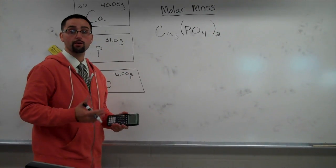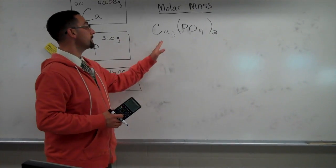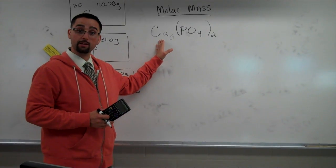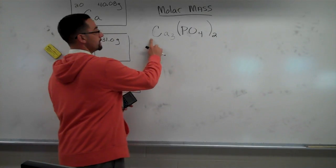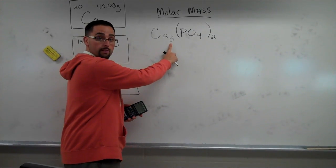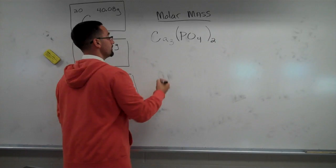So the first thing that we need to do to calculate molar mass is figure out which types of atoms we have in the compound and how many. So for example, if I look at calcium phosphate, the subscript three tells me that there's three calcium atoms.